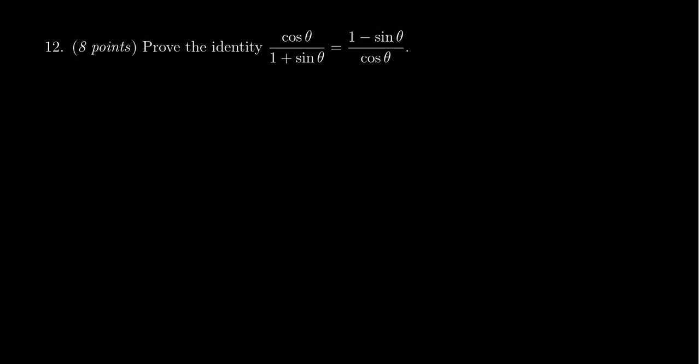In this video we provide the solution to question number 12 for the practice exam number two for Math 1060, in which case we are asked to prove the trigonometric identity cosine theta over one plus sine theta is equal to one minus sine theta over cosine theta.